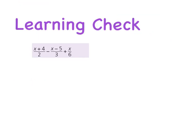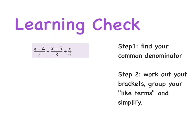Okay. So to finish off, you're going to try one on your own. The learning check today is x plus 4 divided by 2. So you've got a fraction, but you've also got your algebra. Minus x minus 5 divided by 3 plus x all divided by 6. So follow your steps. Step 1, find your common denominator. Step 2, work out your brackets, group your like terms and simplify. And I will see everybody tomorrow.